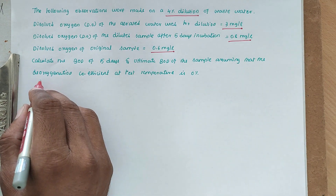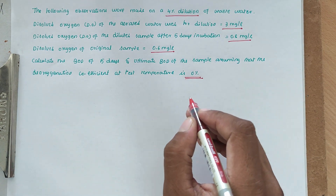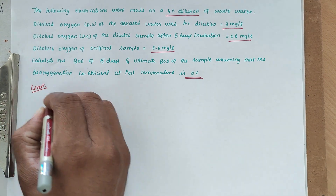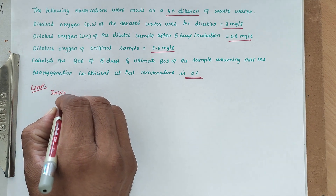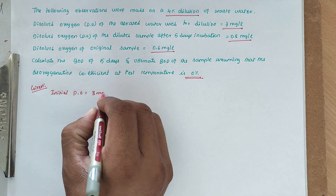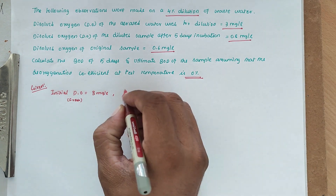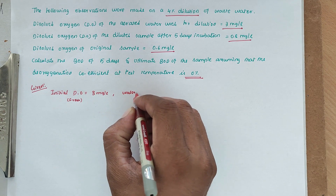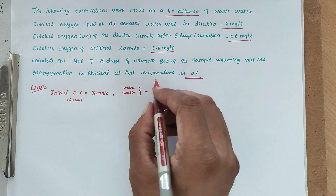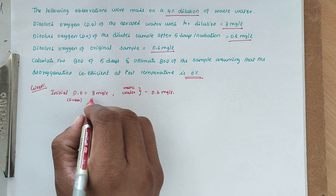Assume that the deoxygenation coefficient at the test temperature is 0.1. Now listing the given values: the initial dissolved oxygen of the fresh water is 3 mg/L, and the wastewater dissolved oxygen is 0.6 mg/L.